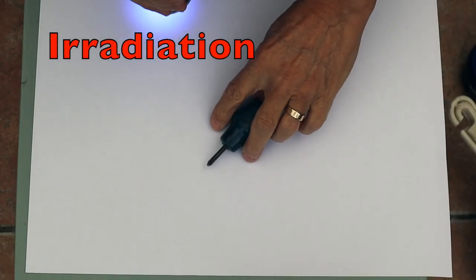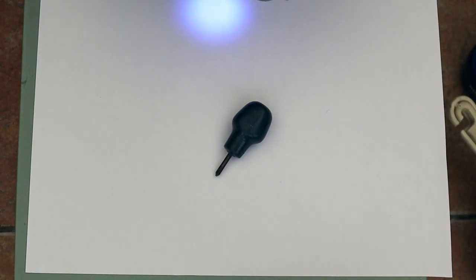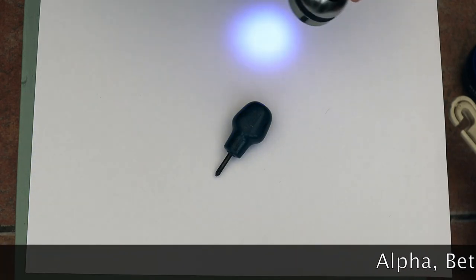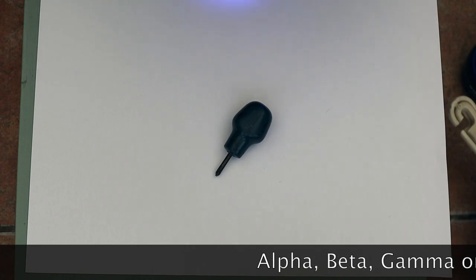Let's put an object on the table here. Exposing an object to one of the four types of nuclear radiation, actually most usually gamma.